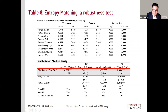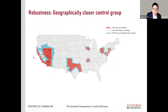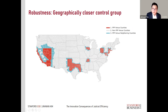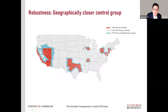We ran two additional robustness tests. First, entropy matching to account for the fact that courts might be systematically different even after including controls and fixed effects. Second, we use a different control group — neighboring counties to the 13 treated districts — as an alternative control group to reduce concerns about unobserved heterogeneity across districts. Across both robustness approaches, we continue to find consistent and similar results.